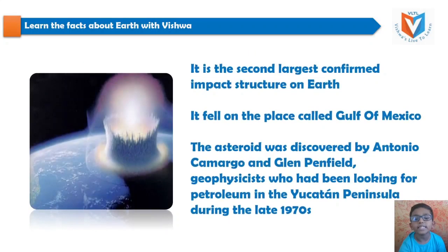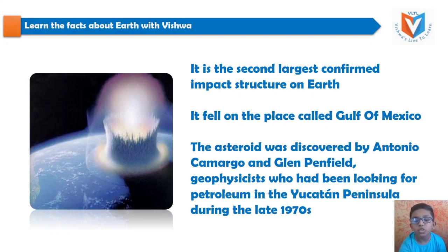It is the second largest confirmed impact structure on Earth. It fell on the place called the Gulf of Mexico. The asteroid was discovered by Antonio Camargo and Glenn Penfield, geophysicists who had been looking for petroleum in the Yucatan Peninsula during the late 1970s.